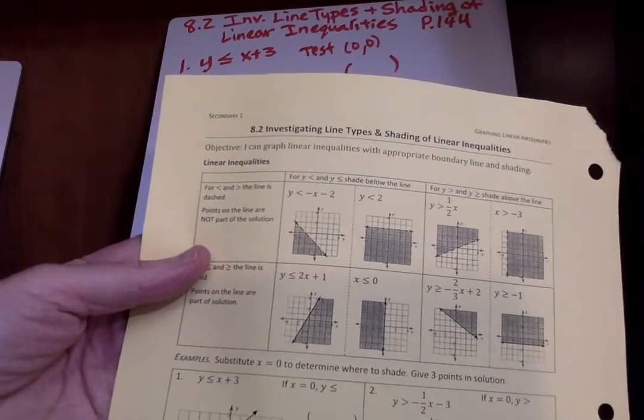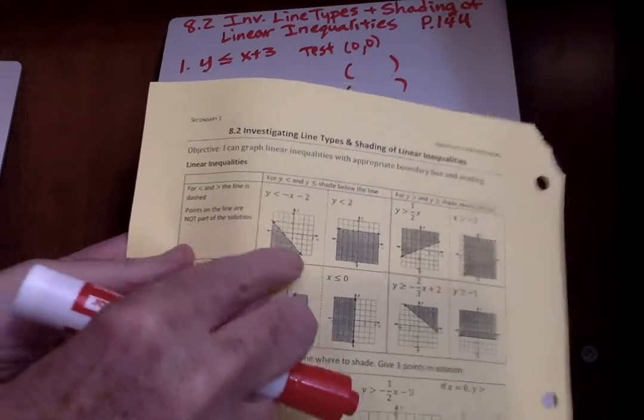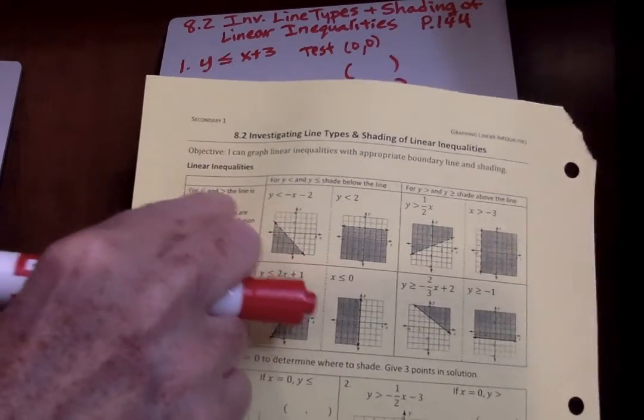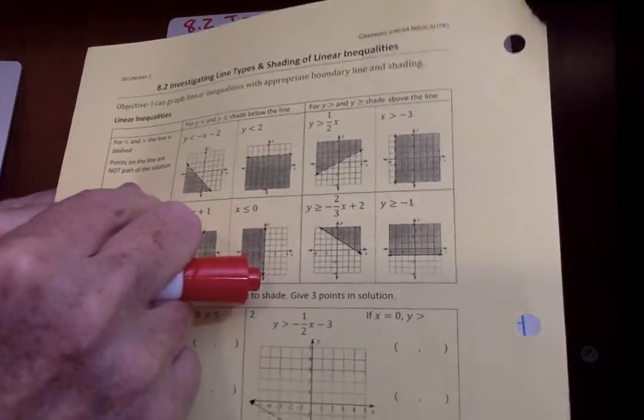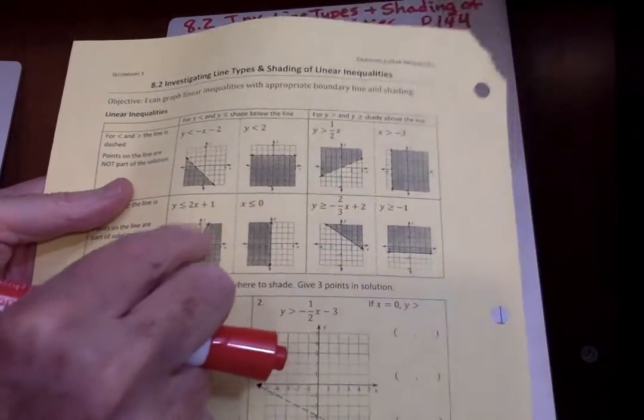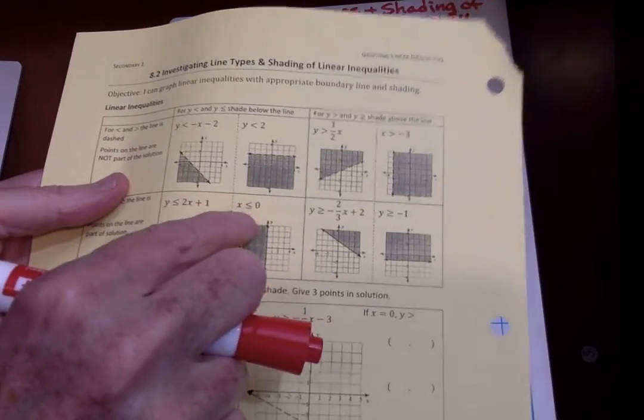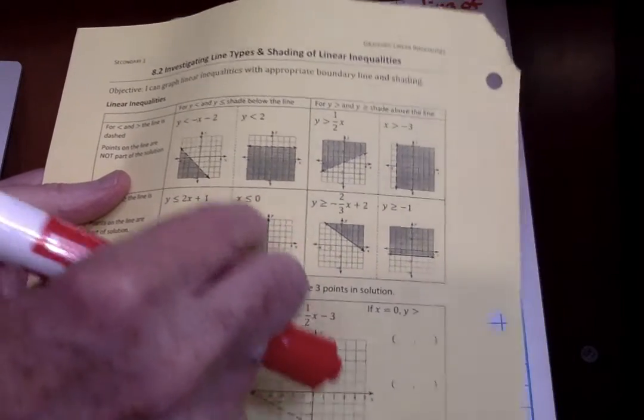Points on the line are not part of the solution, so it's dotted here. Again this is greater than or less than. If it is or equal to, then you're going to have a solid line. More ink means more ink here and it's going to be a solid line.